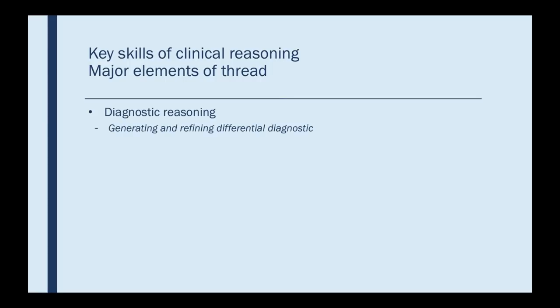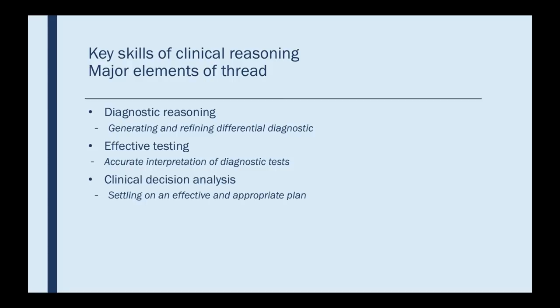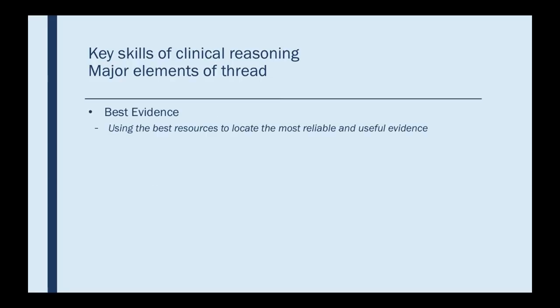What are the key skills of clinical reasoning? We have a clinical reasoning thread that extends through the four years, started last year in your foundations course with Dr. Gouda. The major elements are diagnostic reasoning, where you generate and refine a differential diagnosis; effective testing, where you use the sensitivity and specificity of tests and come up with an accurate interpretation of diagnostic tests — order the tests that will be useful and don't order the tests that won't be useful; and clinical decision analysis, where you explore the different options with the patient and come up with an effective and appropriate plan. There's also best evidence — we stress this throughout your four years, and there are good resources to locate the most reliable and useful evidence.